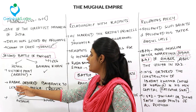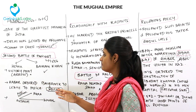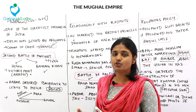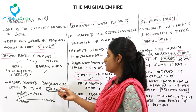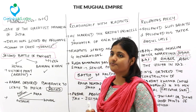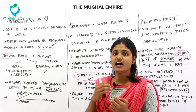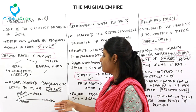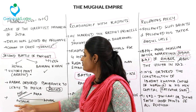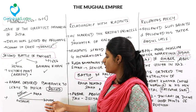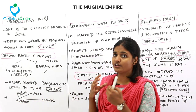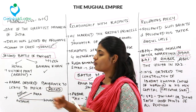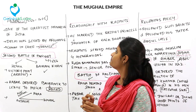Akbar later ordered Bairam Khan to leave to Mecca; on the way, Bairam Khan was killed. Akbar then extended his empire from Agra to Gujarat and from Gujarat to Bengal, and the north-western frontier was protected.